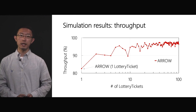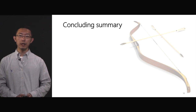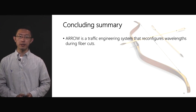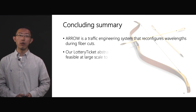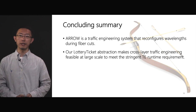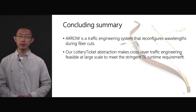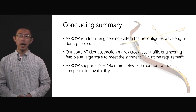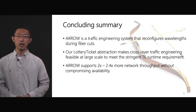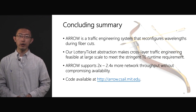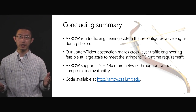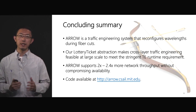In conclusion, ARROW is a traffic engineering system that reconfigures wavelengths during fiber cuts. While restoration is done on the optical layer and TE is done on the IP layer, our lottery ticket abstraction makes cross-layer traffic engineering feasible at large scale to meet stringent TE runtime requirements. Our experiments show that ARROW supports 2 to 2.4 times more demand without compromising availability. Our code is available online, and we welcome more colleagues in the community to join us and explore new exciting opportunities on the optical layer together. Thank you for your attention.